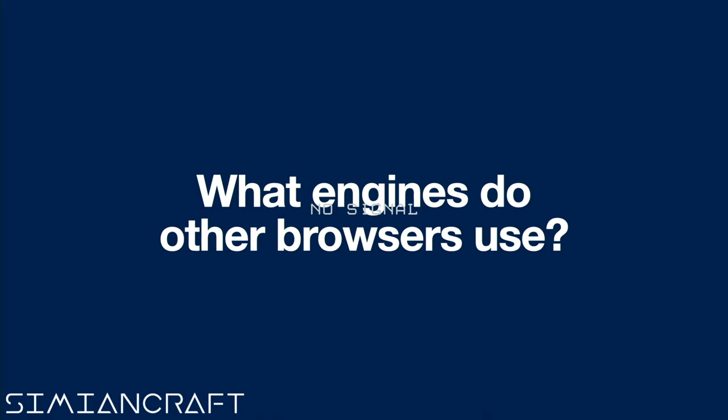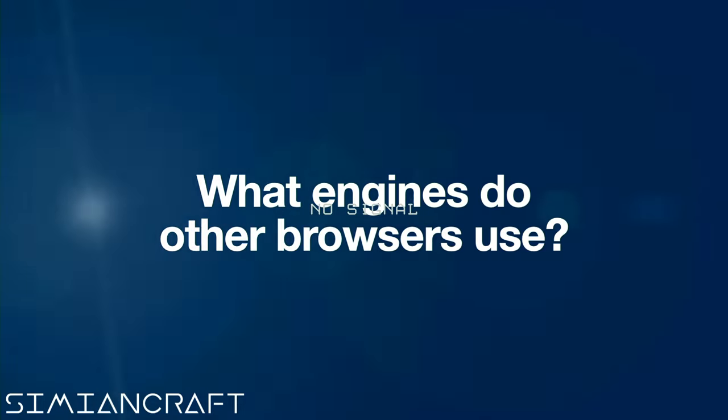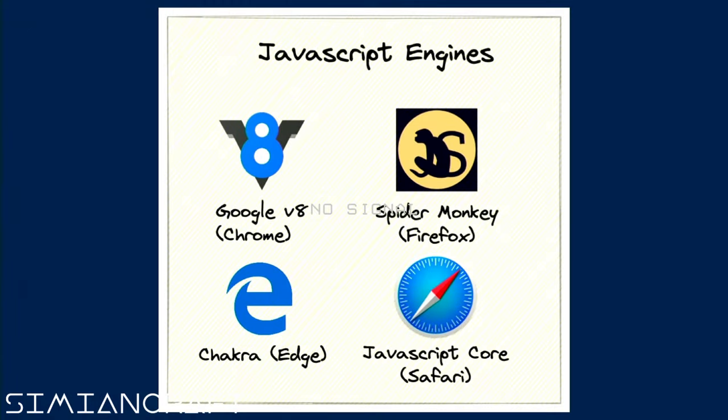As a quick side note, not all browsers use the same JavaScript engine — they all use something different. But all engines have to use the standardized ECMAScript language features set by the TC39 committee. The four main engines and their browsers: V8 for Chrome, SpiderMonkey for Firefox, Chakra for Edge, and JavaScriptCore for Safari. Firefox wins the creative name award.